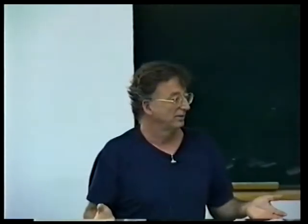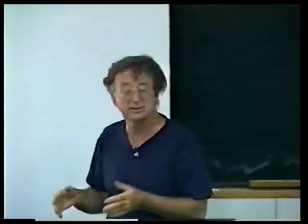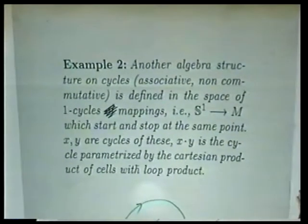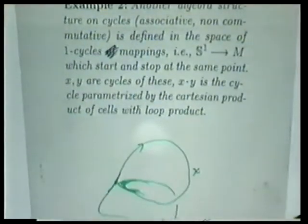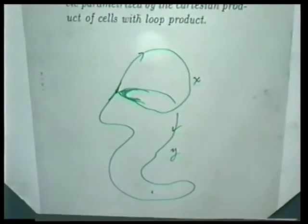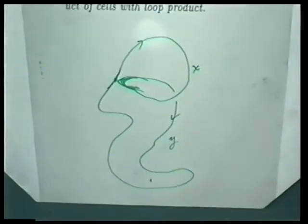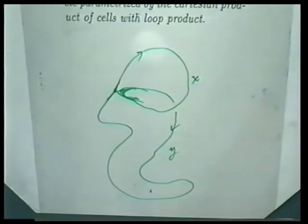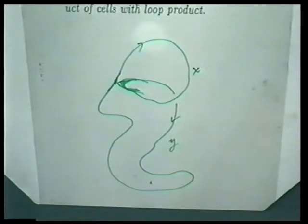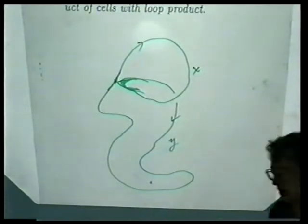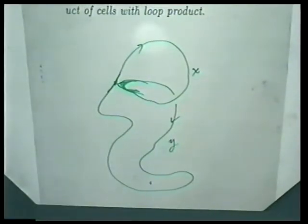Any space can be divided into cells. These cells have boundary and you can make homology. I'm talking about the homology of any space. Take the space to be the space of mappings of a circle into M which start and stop at the same point — maps of the circle taking a given point into a base point. Then the homology of this space of mappings forms an algebra. You take a cycle, take any two points, get two loops at the base point, go around one and then around the other.